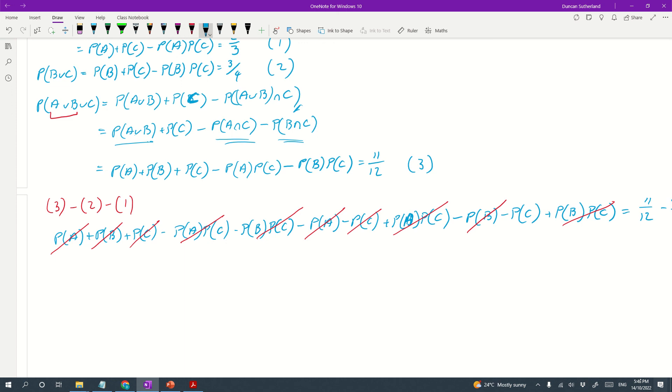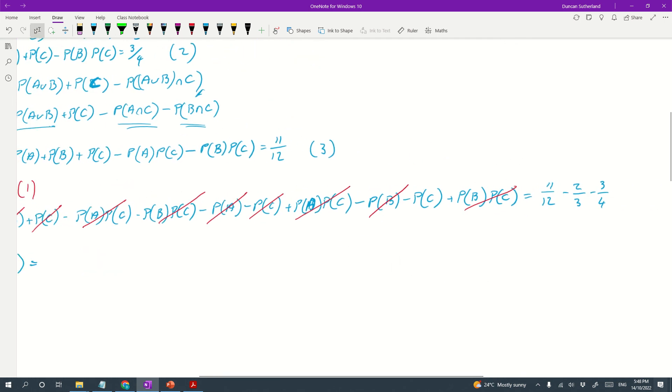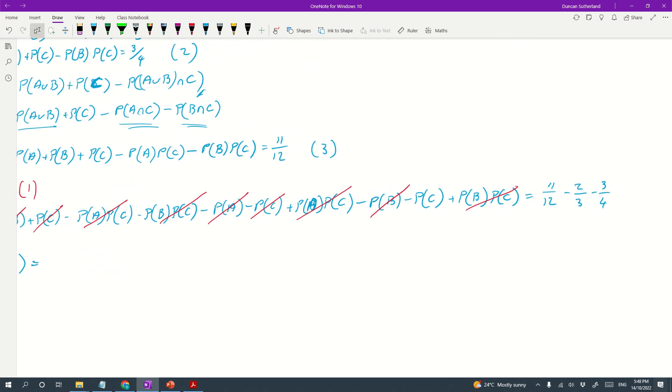So we've got minus PC equals 11 twelfths minus two thirds minus three quarters, that bubbles down to negative half. So PC is equal to a half. Now that's pretty much cracked the problem open because we can start back substituting it.